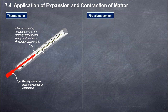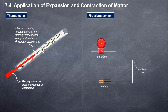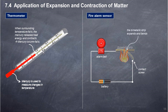Fire alarm sensor is a fire detection and alarm warning device. It has a bimetallic strip that can bend when heated up. During a fire incident, the bimetallic strip is heated up, expands, and bends. The bimetallic strip touches the contact screw and the alarm bell sounds.